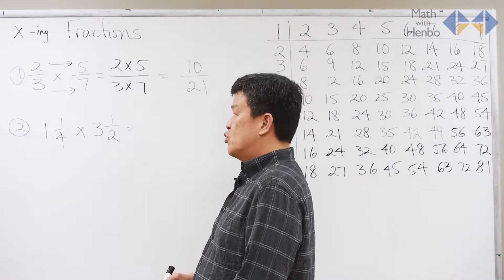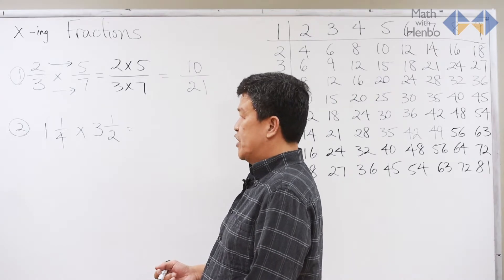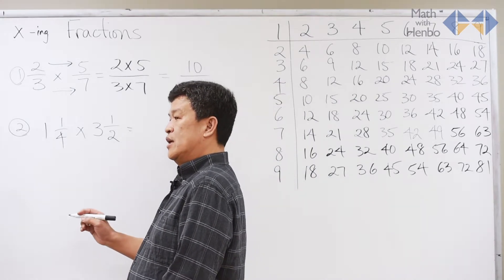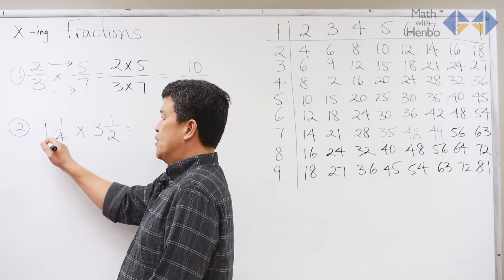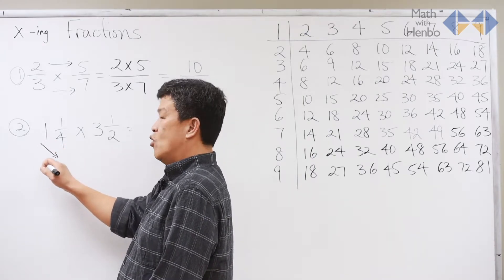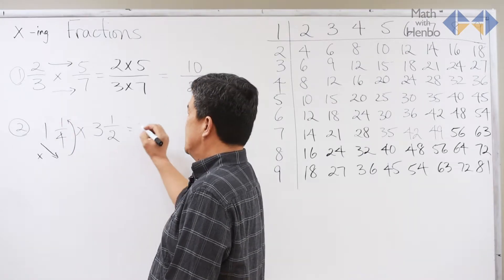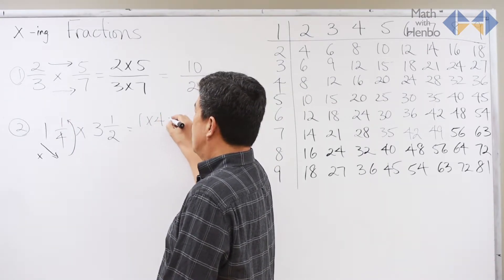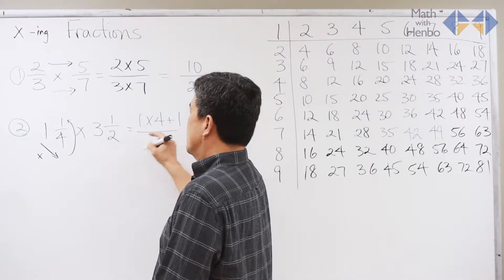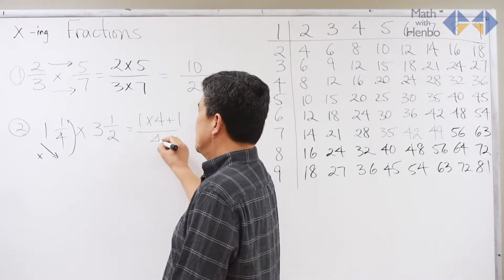For the second kind of problems with mixed numbers, it's a little trickier. But, the best way to resolve it is simply multiply the front whole number by the bottom number, and then add to the top number. So, essentially, this becomes 1 times 4 plus 1. And the bottom number never changes, so that stays 4.